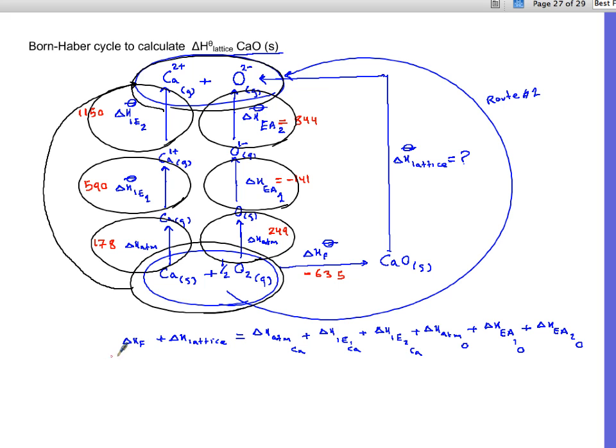Now I'm going to plug in. So delta H lattice is simply delta H atomization of calcium 178 plus delta H ionization first one 590, plus the second ionization energy, plus the second ionization energy 1150.